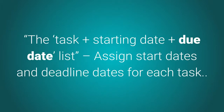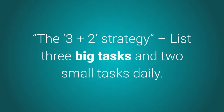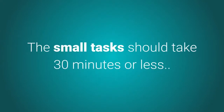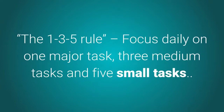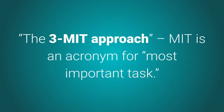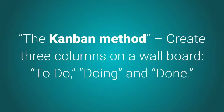The second system: the task plus start date plus due date list — assign start dates and deadlines for each task. Third: the to-do list twosome — a master task list plus a daily task list. Fourth: the three-plus-two strategy — list three big tasks and two small tasks daily; big tasks take one to two hours, small tasks 30 minutes or less. Fifth: the 1-3-5 rule — focus daily on one major task, three medium tasks, and five small tasks. Sixth: the project-based system — create separate to-do lists for each individual project. Seventh: the three MIT approach — MIT stands for Most Important Task; pick three top-priority tasks to complete each day.